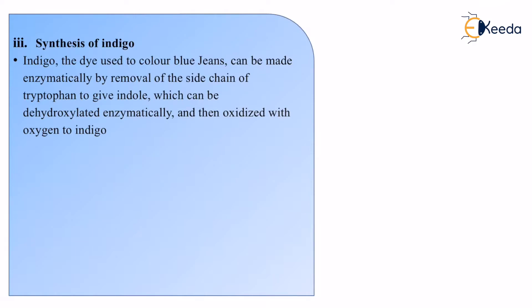From tryptophan we have made indole, and from indole what we do is dehydroxylate it. Dehydroxylate means removal of hydrogen. So the hydrogen is removed from it, and then that dehydroxylated indole is oxidized in the presence of oxygen, because oxidation is the process in which oxygen is mandatory, and it gives us indigo, which is the dye.